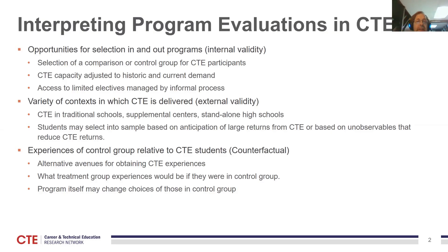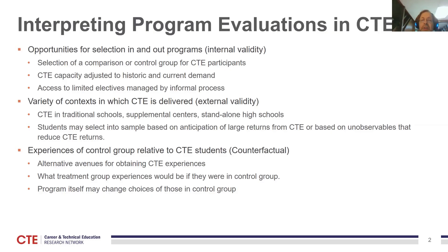Another classic example of external validity issues is heterogeneous effects across students. If we have selection into the program, then even with a randomized control trial, both the treatment and control group students may be different from the broad population that might be treated if we take a program to scale. If that selected population volunteered because they expected a very large return, the estimated causal effects — even with high internal validity — might provide a very misleading suggestion of what will happen when we take this program to scale, because the program was small, standalone, and operated on volunteers in a very specific circumstance.